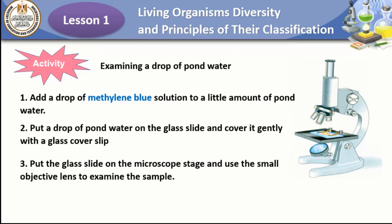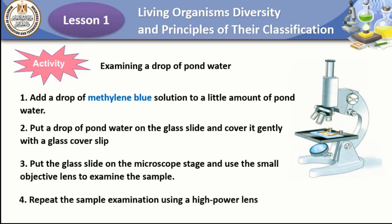Step four: repeat the sample examination using a high power lens. First use the low power lens to see all numbers of microorganisms. Then use the high power lens to see the shape of each microorganism in big size.